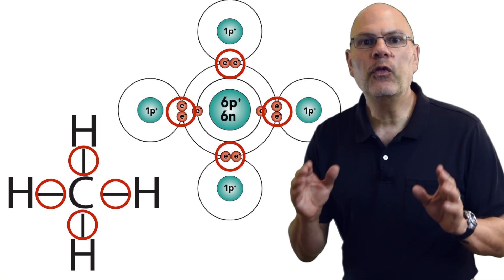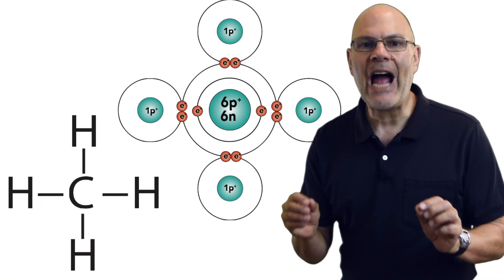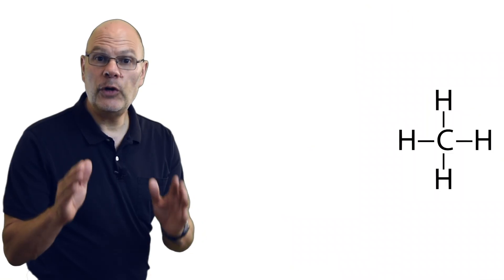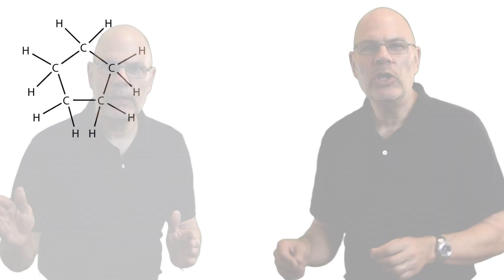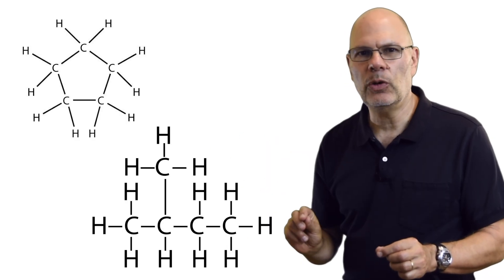Here's carbon forming four covalent bonds with four hydrogen atoms to form methane. If you can form four covalent bonds, you can form chains. You can form rings and also branched molecules.